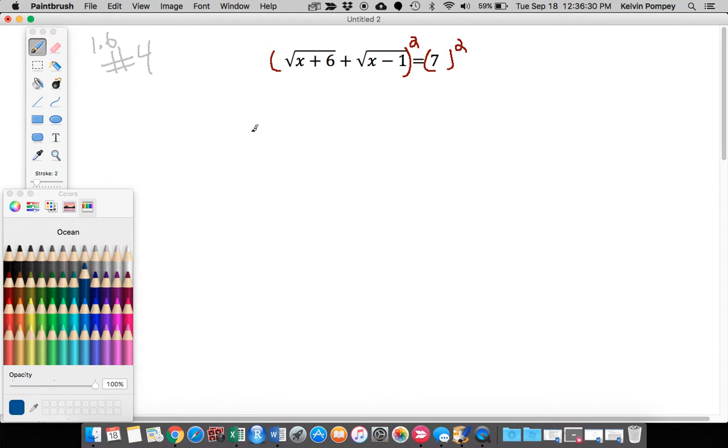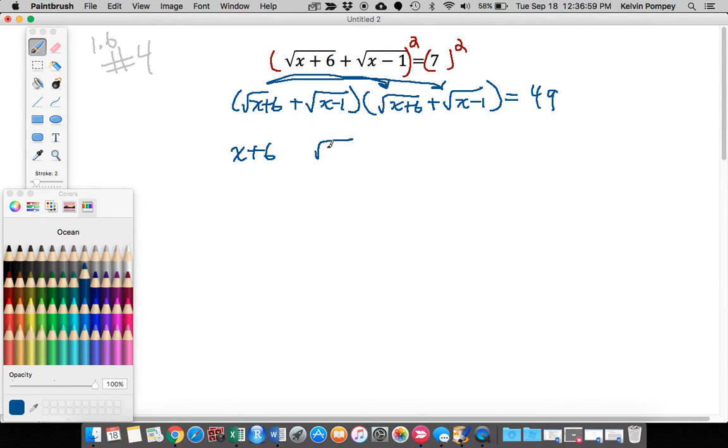I'm going to square both sides, raise both sides to the second power. When we square an expression that looks like this, we got to remember to use our FOIL method. When you multiply two things that are under a square root by each other, your square roots cancel. So I have x plus 6, then square root of (x+6) times square root of (x-1), plus the same thing, plus x minus 1 equals 49.